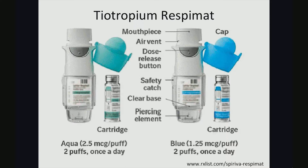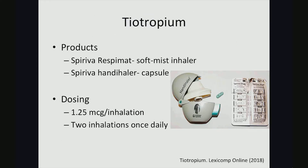Looking specifically at tiotropium, this image gives a visual of what it looks like — it's a soft mist inhaler. To prepare a dose, the patient twists the piercing element at the bottom and then presses the dose-release button. Tiotropium actually comes in two forms: the soft mist inhaler and a HandiHaler, which requires the physical insertion of a capsule. For this presentation, we'll focus mostly on the tiotropium Respimat, which is the soft mist inhaler.